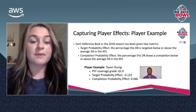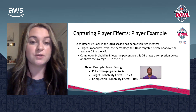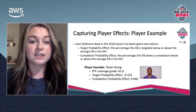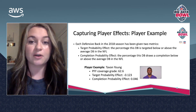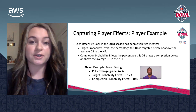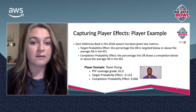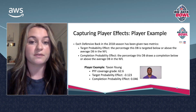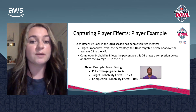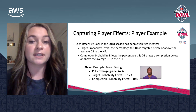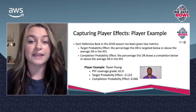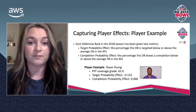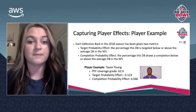From my two models, it basically captures two different types of player effects. Each defensive back in the 2018 season has now been given two metrics: a target probability effect and a completion probability effect. The target probability effect is the percentage that this defensive back is targeted below or above the average defensive back in the NFL, and the completion probability effect is the percentage that this defensive back draws a completion below or above the average defensive back in the NFL.